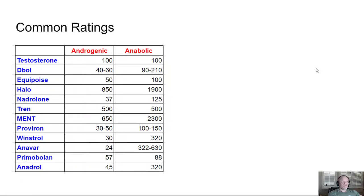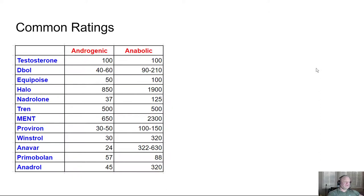Let's look at some common ratings. Testosterone is 1:1. D-Bol has an androgenic rating of 40–60 and anabolic of 90–210. Equipoise is 50:100. Halotestin is 850–1900. Nandrolone is 37–125. Trenbolone is 500:500. Mesterolone is 650–2300. Proviron is 30–50 androgenic, 100–150 anabolic. Winstrol is 30:320. Anavar is 24:322–630. Primobolan is 57:88, and Andriol is 45:320.